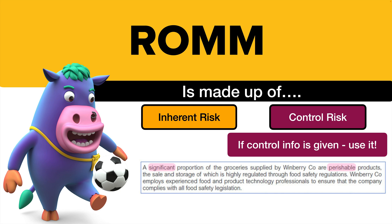But then the examiner tells you they employ experienced food and product technology professionals — that's their control. They're perfectly used to dealing with perishable products and make sure they comply with all food safety legislation. So the examiner is getting you to use control risk and understand that the control risk overrides the inherent risk. Therefore, it's not a significant risk of material misstatement.